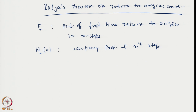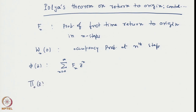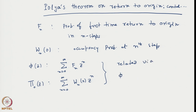With this, we related the two via their generating functions. We developed two generating functions: φ(z) defined as Σ f_n z^n, a generating function, and similarly π₀(z) defined as Σ from n=0 to infinity of W_n(0) z^n. And φ(z) equals 1 minus 1 over π₀(z).